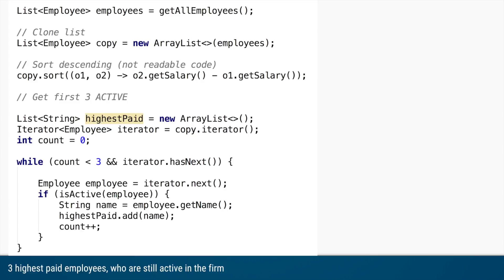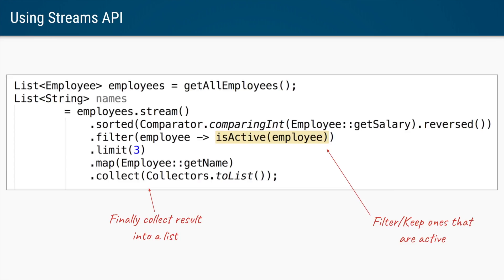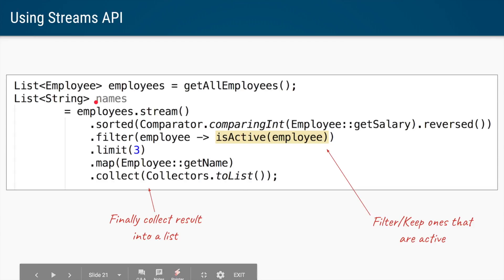Now suppose we also want only active employees — there's a method isActive returning true or false. Adding just that single extra requirement increases the imperative code considerably and makes it less readable. With streams, you keep the exact same code and simply add a filter: given an employee, check if the employee is still active, and the rest of the code remains the same. Instead of forEach, you can use collect(Collectors.toList()) to store the names into a list of strings.